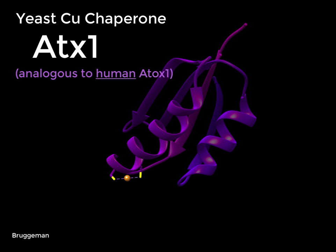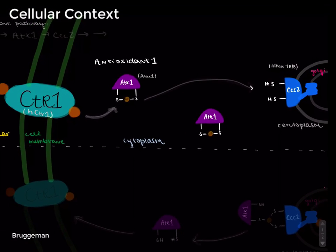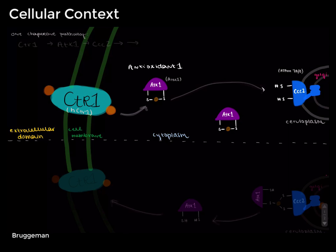Similarly, the CCC2 protein is analogous to the human protein ATPase 7A and B. The analog names are written in parentheses besides their yeast representatives. ATX1 is a part of a chain of copper activity through the cell. This chain of activity includes copper transported through the cell membrane by CTR1 to ATX1 to the CCC2 protein and onward. In short, the ATX1 is a piece of a chain of copper transport, protection, and usage through the cell.